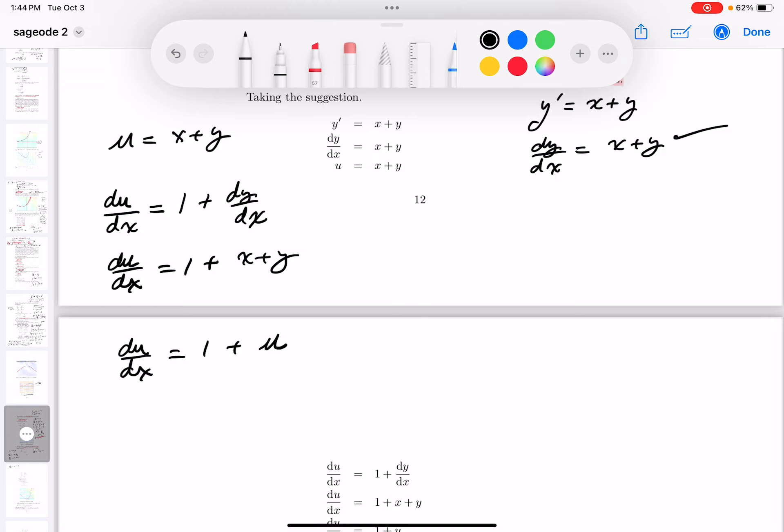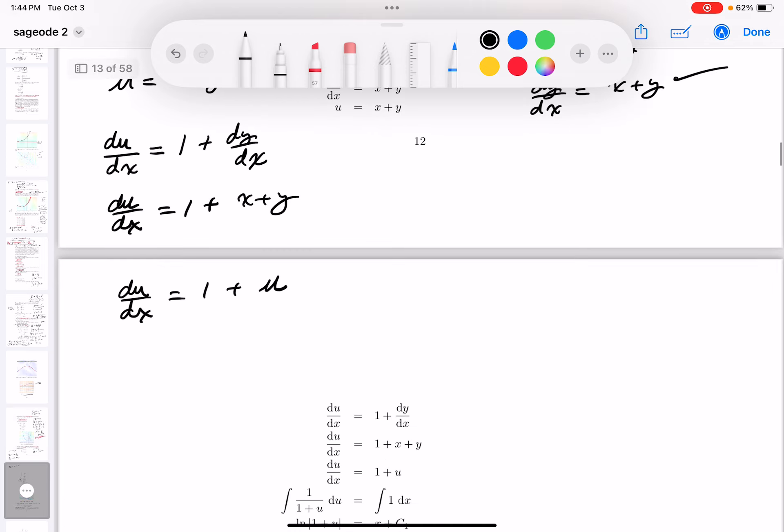Now what are you going to do now? I'm going to try to separate variables at this point. And let's see if I can do that. Yeah, I think I can. The way you do that, I'm going to write that as 1 over 1 plus u du would be dx. I'm going to try to integrate both sides. And I think I can do that. So what do you get? The natural log, the absolute value, 1 plus u, equals the antiderivative of dx is just going to be x plus some constant of integration.